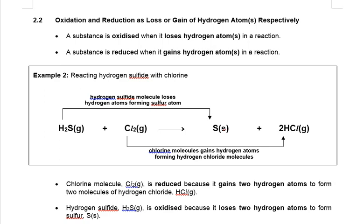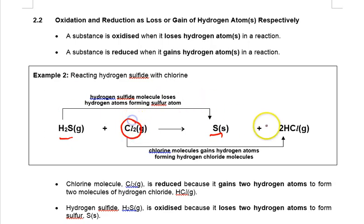Moving on to the second definition involving hydrogen atoms. In this reaction, H₂S (hydrogen sulfide) has lost hydrogen, so it is oxidized. Cl₂, on the other hand, has gained one hydrogen atom. If it gains hydrogen, we say that chlorine has been reduced into HCl — in this case, hydrogen chloride gas.